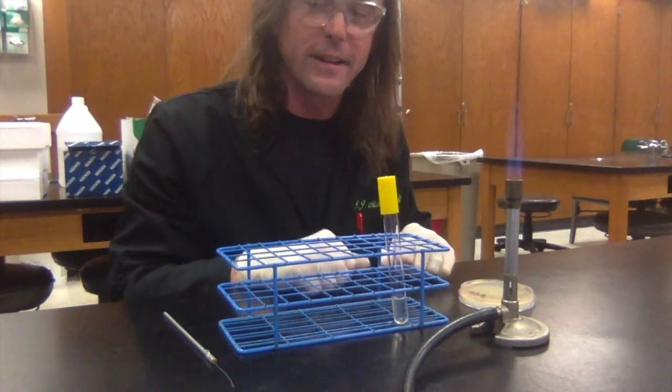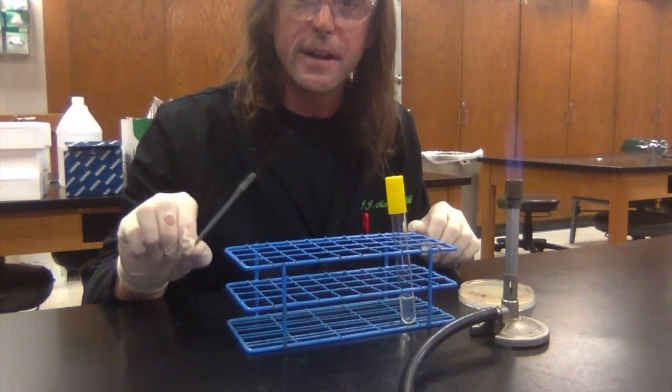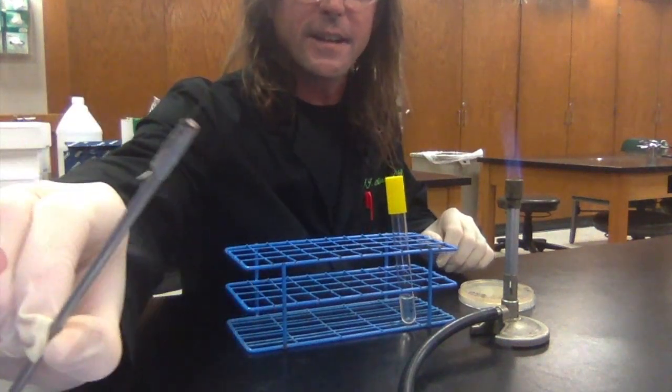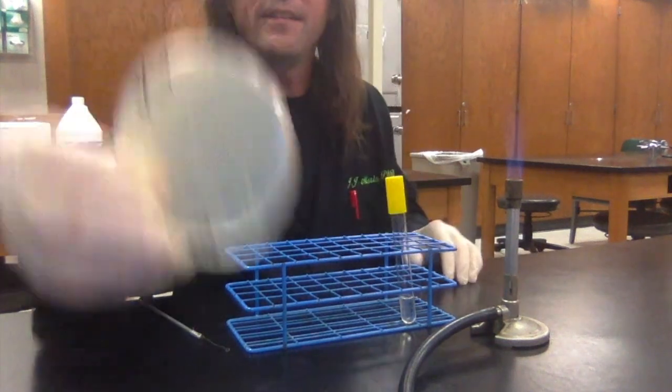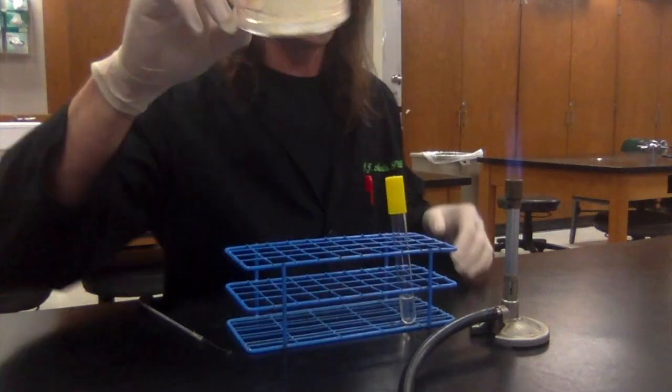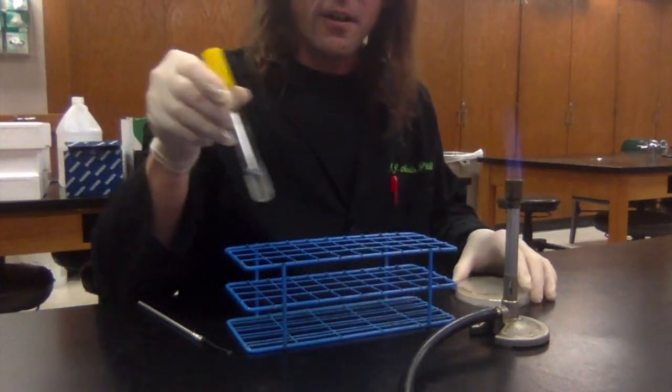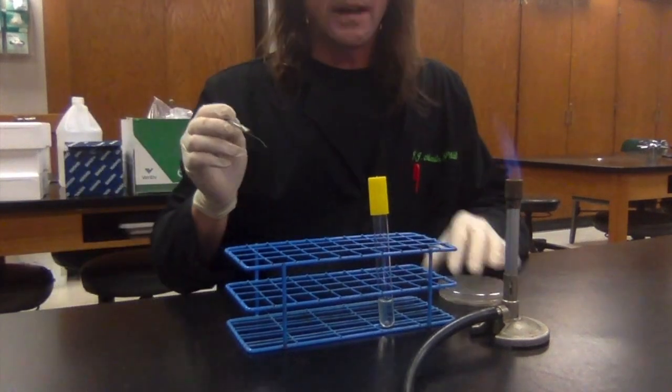I have an inoculating loop over here, and I've got a plate that's already got some bacteria growing on it. You can see there are individual colonies on here, and this is sterile R2A broth. This really is an easy process.